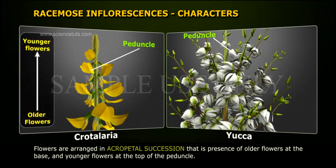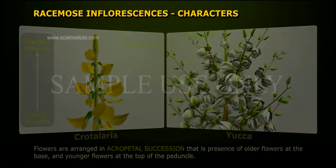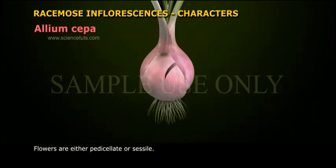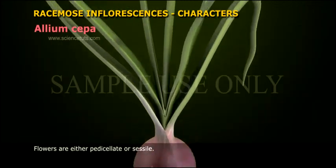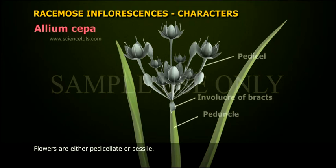Flowers are arranged in acropetal succession — that is, older flowers are present at the base and younger flowers at the top of the peduncle. Flowers are either pedicellate or sessile.